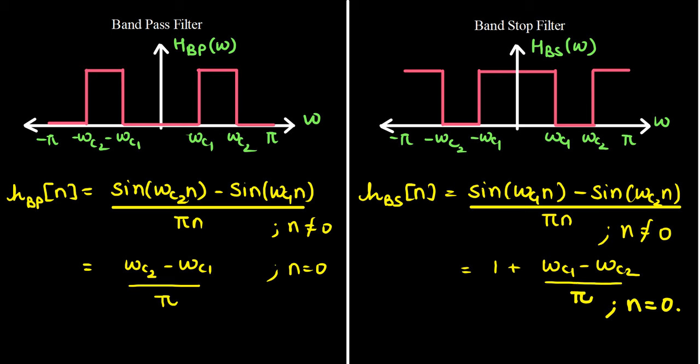We also saw that these ideal filters can be used for designing an FIR filter by truncating with a window and introducing a delay of m/2, where m is the order of the filter. In this lecture, we are going to observe the pole-zero plots for FIR causal filters for low pass, high pass, band pass, as well as the band stop filter.